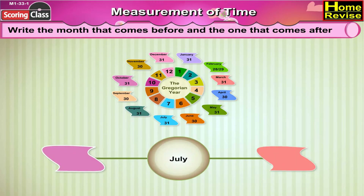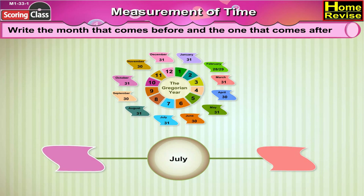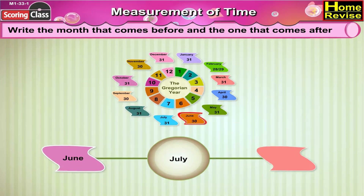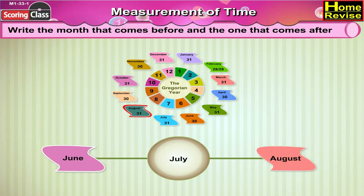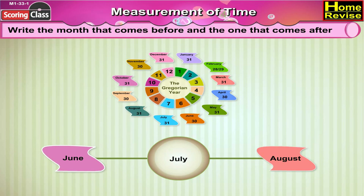July. Which month comes before July? June. And which month comes after July? That's correct — it is August. Thank you.